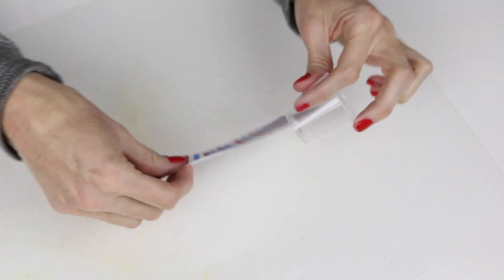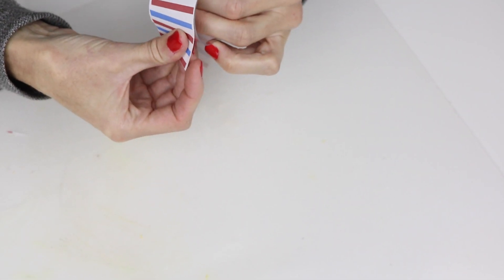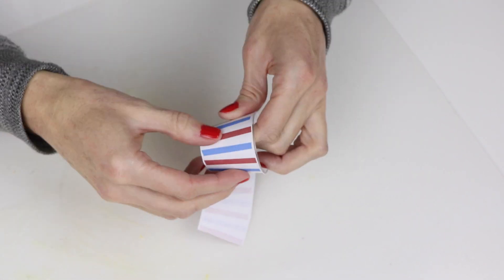Now you will just wrap that around the cup. I secured one side with a piece of tape and the other side with glue. There was a little bit of excess so I just cut that off.